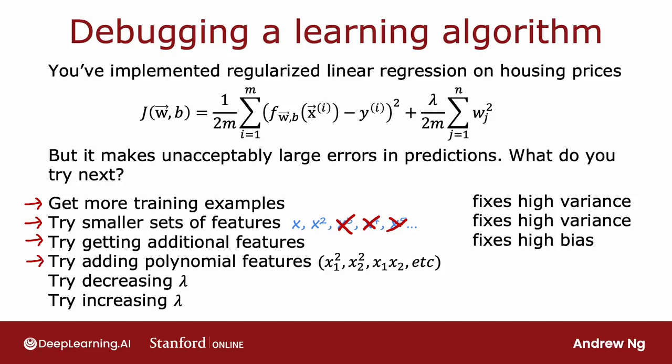Adding polynomial features is a little bit like adding additional features. So if your linear function, straight line, can't fit the training set that well, then adding additional polynomial features could help you do better on the training set. And helping you do better on the training set is a way to fix a high bias problem.